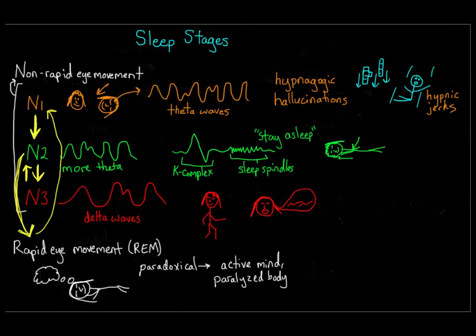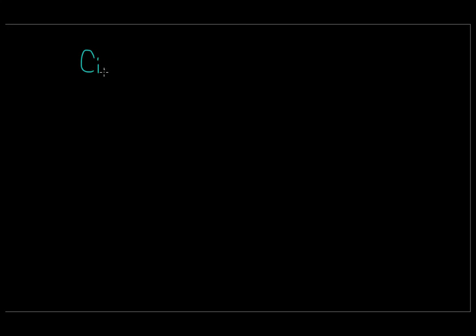You probably get tired around the same time every afternoon or evening, and you might wonder how your body knows when to fall asleep, or why a lot of people get tired in the afternoon. The answer lies in something called circadian rhythms.